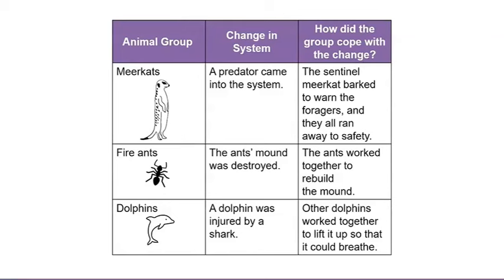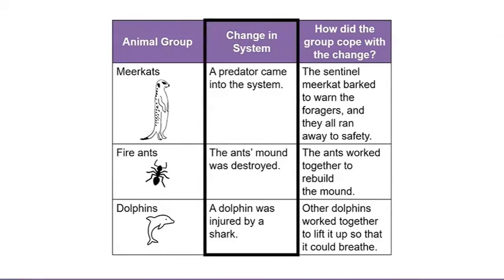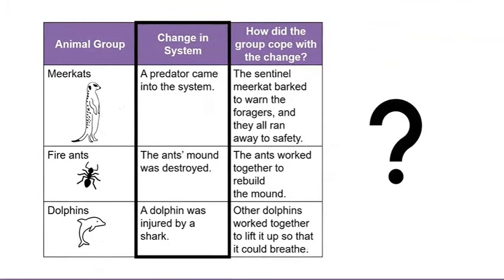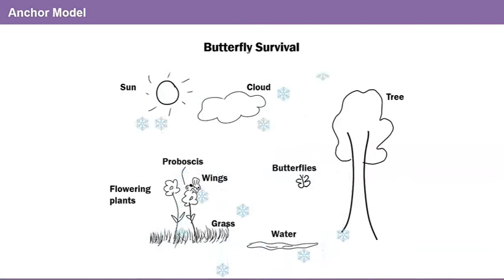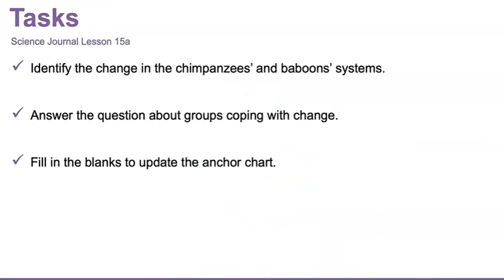Today we discussed short-term changes in an animal group's system. But what if an animal group faced a long-term change? What do you think would happen if an animal group's entire environment changed? For example, what would happen to butterflies if the temperature in their environment suddenly became very cold? In upcoming lessons, we will begin to explore the question, what happens to organisms when the environment changes? Let's review your tasks for today: first, identify the change in the chimpanzees and baboons system; second, answer the question about animal groups coping with change; third, fill in the blanks to update the anchor chart.